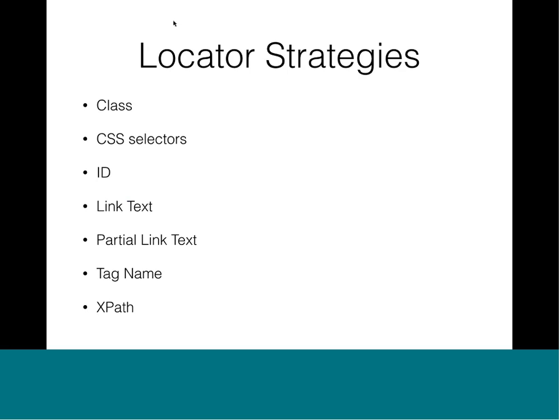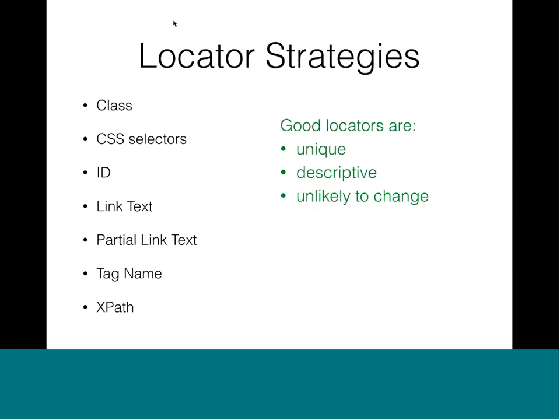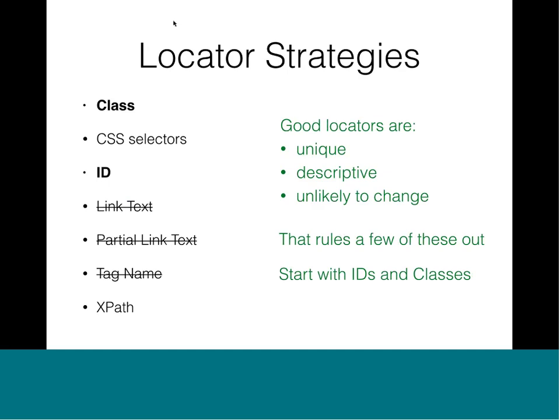Locators is a very broad topic and can be intimidating if you're just getting started. Good locators are unique, descriptive, and unlikely to change. You should start with IDs and classes — they're the most likely candidates for semantic, descriptive, unique markup, and they're the fastest for Selenium to execute. If parts of the page don't have unique IDs or classes, you can use CSS selectors or XPath, but use those with care because you can write very poor-performing, very brittle locators with them.